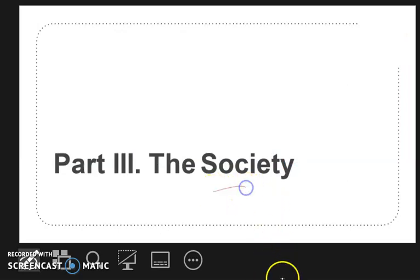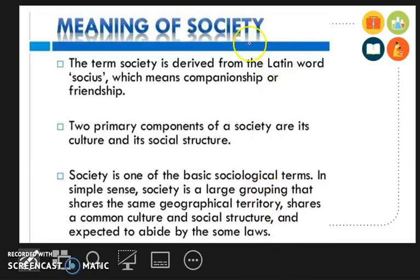How about society? The term society is derived from the Latin word socius, which means companionship or friendship. We have two primary components of a society: culture and social structure. Society is a large grouping that shares the same geographical territory, shares a common culture and social structure, and is expected to abide by some laws.